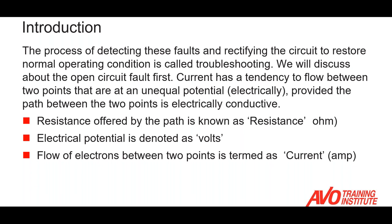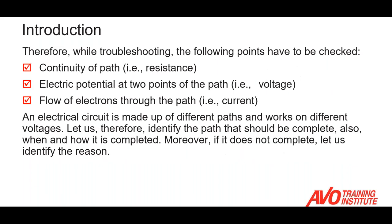We're going to talk about the open circuit fault first. Current has a tendency to flow between two points that are at an unequal electrical potential, provided the path between the two points is electrically conductive. So we have three basic values we're looking for in a circuit: resistance, which we refer to as ohms; our electrical potential, our EMF, designated as volts; and the flow of electrons between two points, which is current, measured in amps.